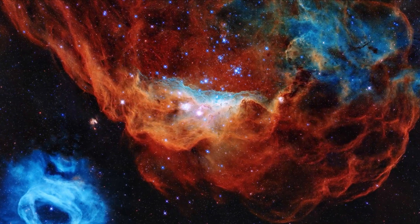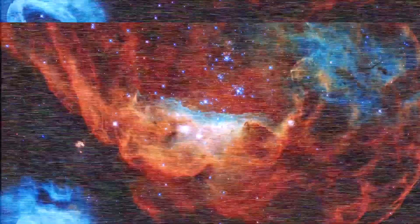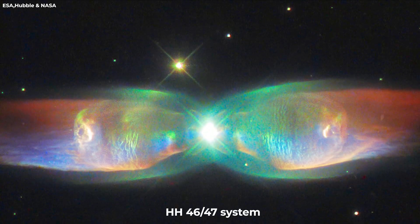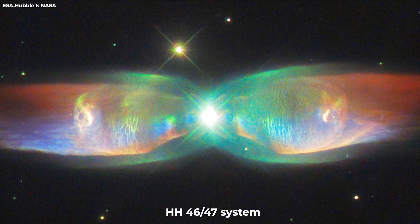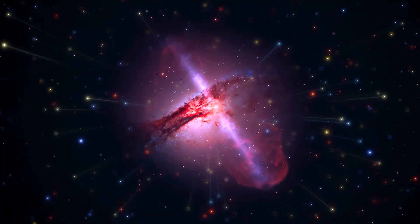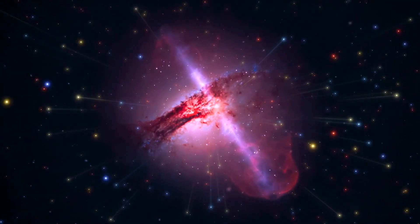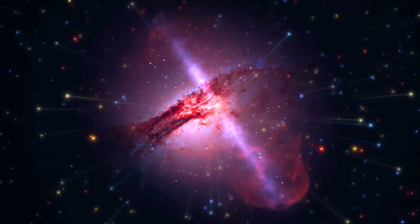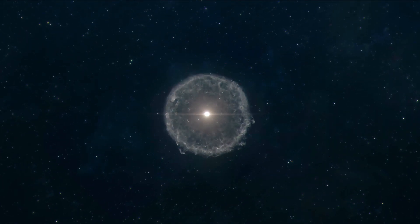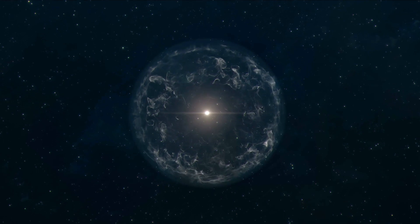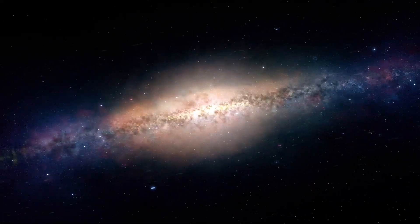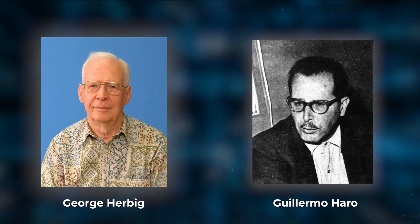These star birth locations can be found all around the galaxy, including the HH 4647 system. They all share similar characteristics: blazing clouds of gas and dust connected to young stars that fire outward jets of matter. They have been known to astronomers for more than a century, but it wasn't until later that astronomers began to link them to star formation. They were first investigated as potential star formation sites by George Herbig and Guillermo Haro.